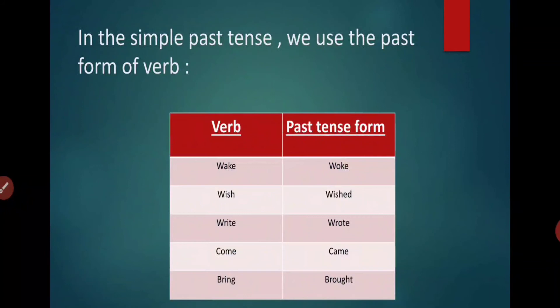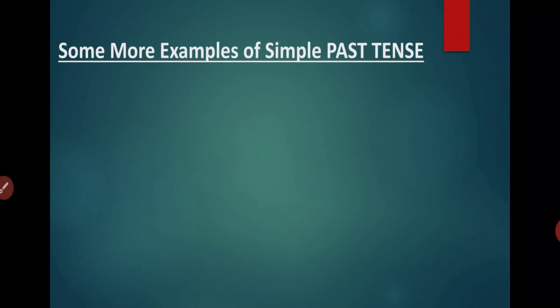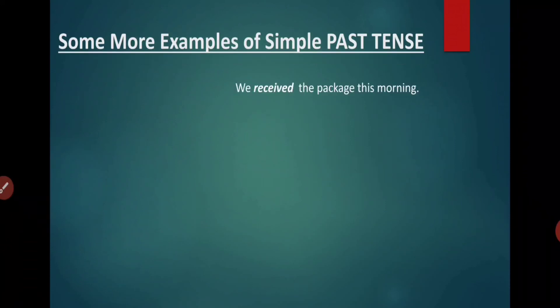So now let's have few examples of simple past tense. We received the package this morning means now might be it is the afternoon or is the evening. That's why the spokesperson is saying that we received the package. They received it earlier. They are not receiving it right now. If they are receiving it right now, then they would have mentioned ing form. We have already studied present continuous.